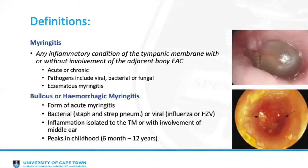Bullous myringitis classically peaks in children between 6 months and 12 years and presents with classic bullae or vesicles on the tympanic membrane, which form between the outer epithelial layer and the middle lamina propria. They may occur as a single vesicle or as multiple vesicles.